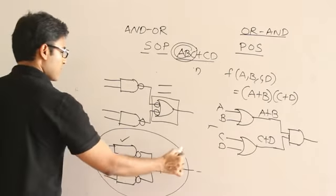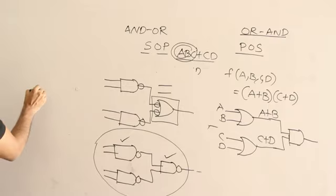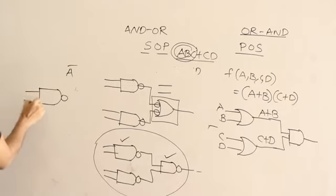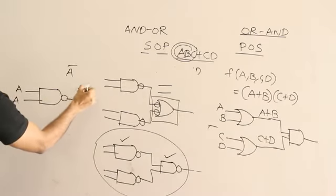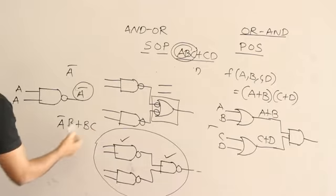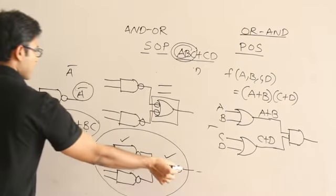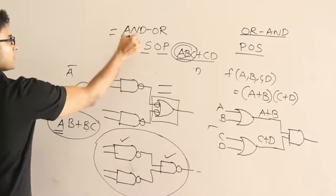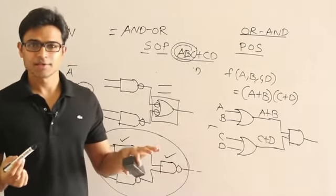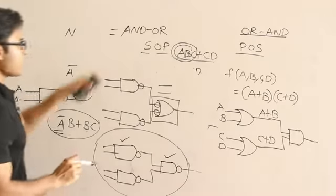Using a NAND gate you can also get NOT: simply give the same input A to both inputs of the NAND gate, and you get A' out — so NOT is implemented using NAND. Therefore, if you want to implement any function like A'B + BC, you first complement A using a NAND gate, then feed it into the AND-OR realization, which is itself realized as NAND-NAND. AND-OR realization is also called NAND-NAND realization.